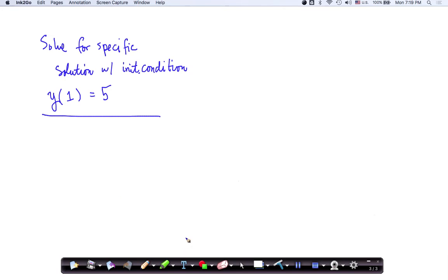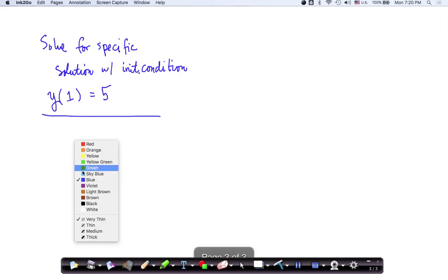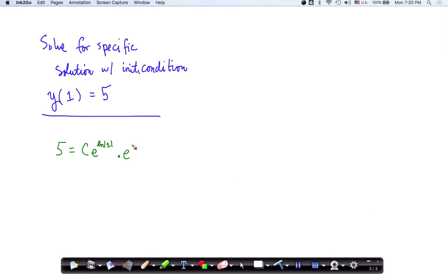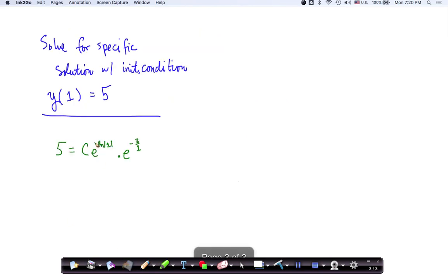Let's continue with our specific solution. What happens when we're given this condition, when y of one is equal to five. So that means if we take our previous equation, I'm going to use this version down here. If I plug in one for x, I should get five for y. So this tells me that five is equal to some constant multiplied by e to the natural log of one times e to the negative three over one. There should be a three here times the natural log of one. Well, it doesn't matter too much because the natural log of one is just zero. The natural log of one is just going to be equal to zero.